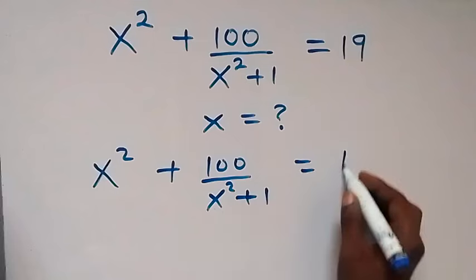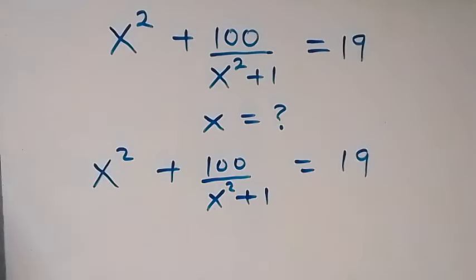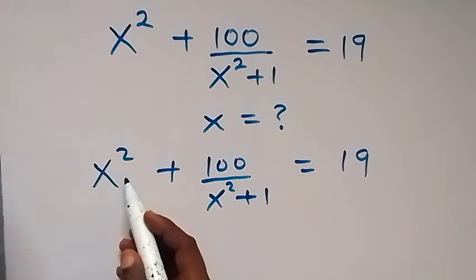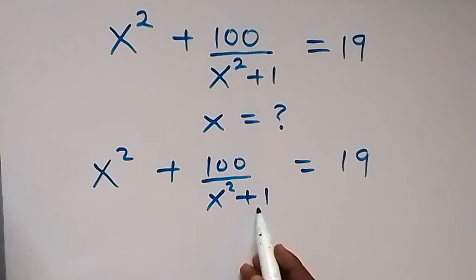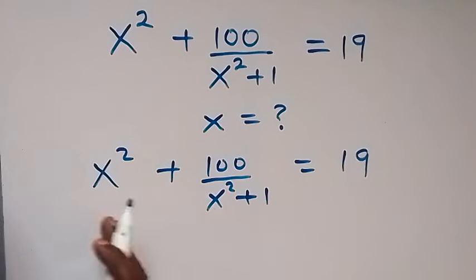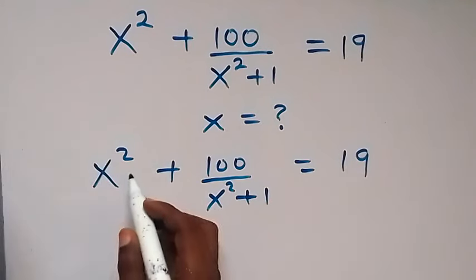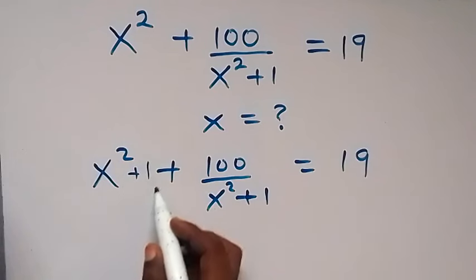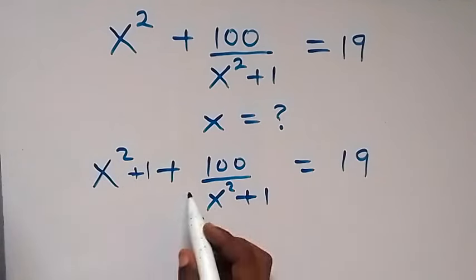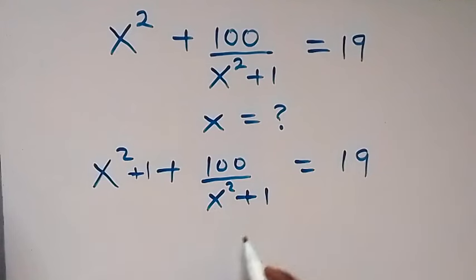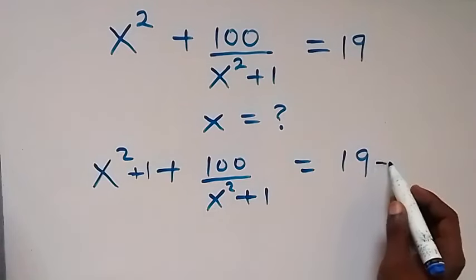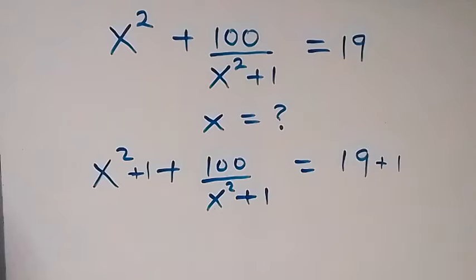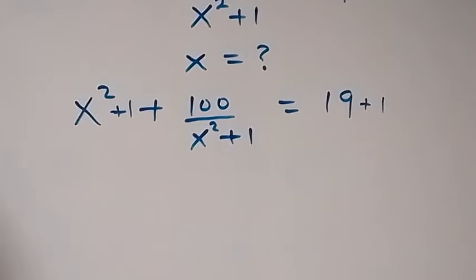We can add one to both sides to make this side also be like x squared plus 1. When we add one to this side we also add one to the other side, so this side becomes x squared plus 1, then plus 100 over x squared plus 1, and the other side becomes 19 plus 1.